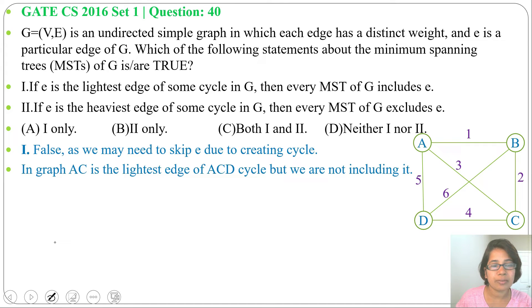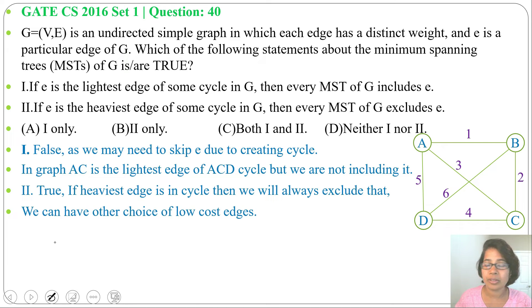Next statement 2: if E is the heaviest edge of some cycle in G, then every MST of G excludes E. This is true. If it is the heaviest edge in a cycle, then we will exclude that. So we can have other choice of lower cost edges, so we can exclude the heaviest edge.